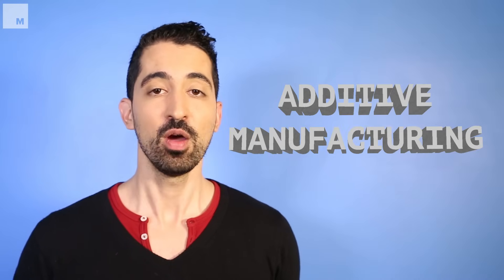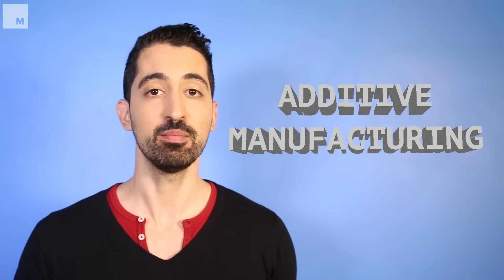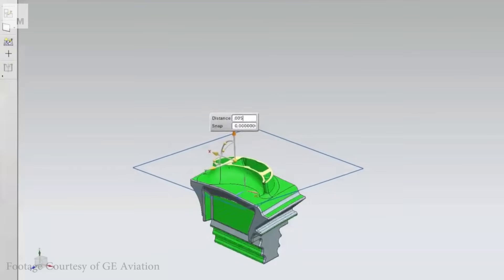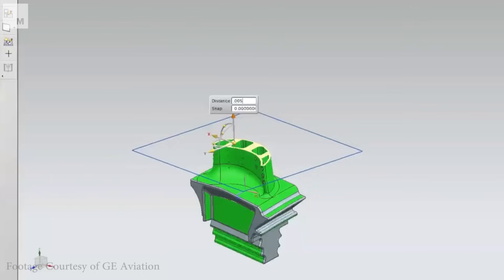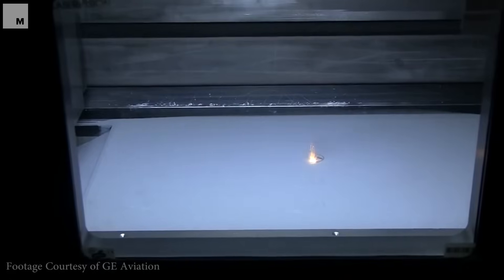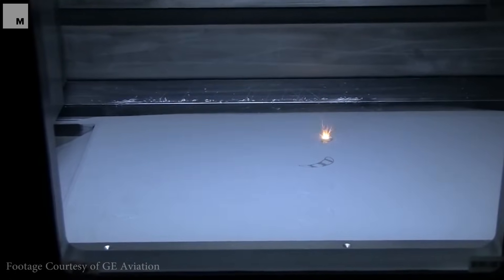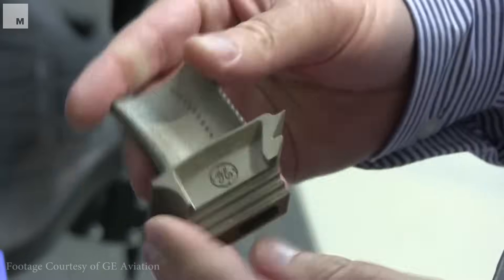3D printing is part of a process known as additive manufacturing, where an object is created by adding material layer by layer. Additive manufacturing allows designers to create complex parts for machines, airplanes, and cars at a fraction of the cost and time of standard means like forging, molding, and sculpting.